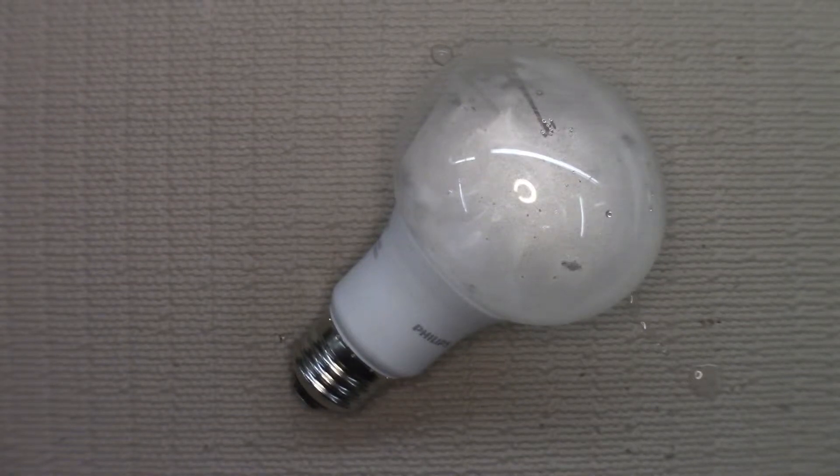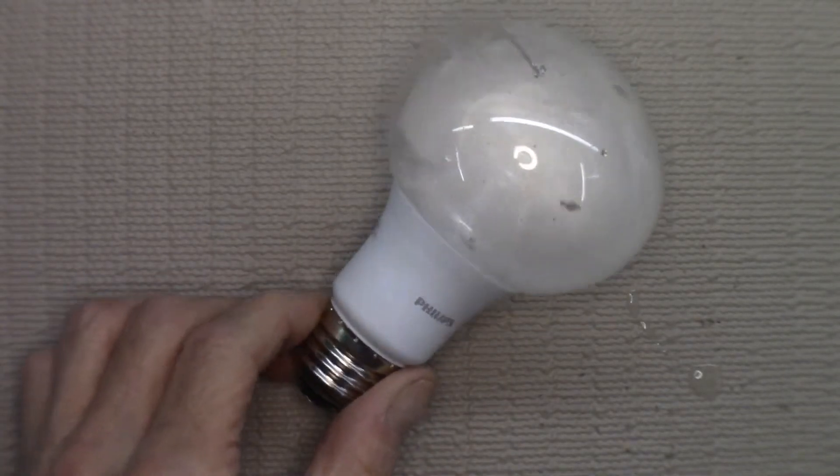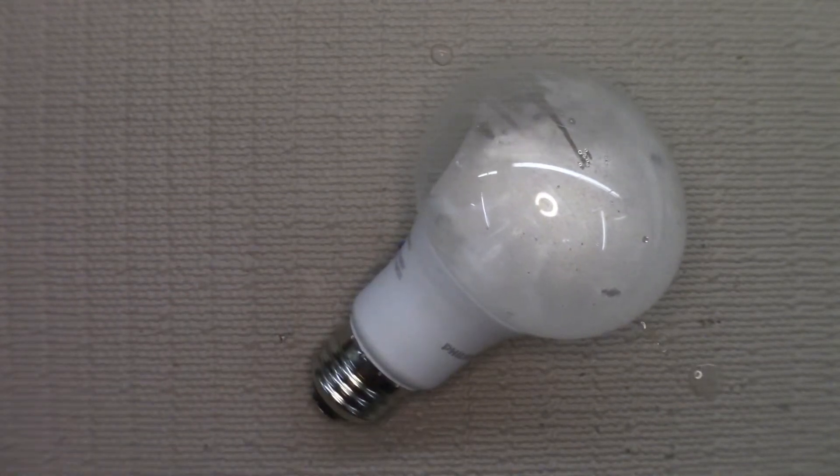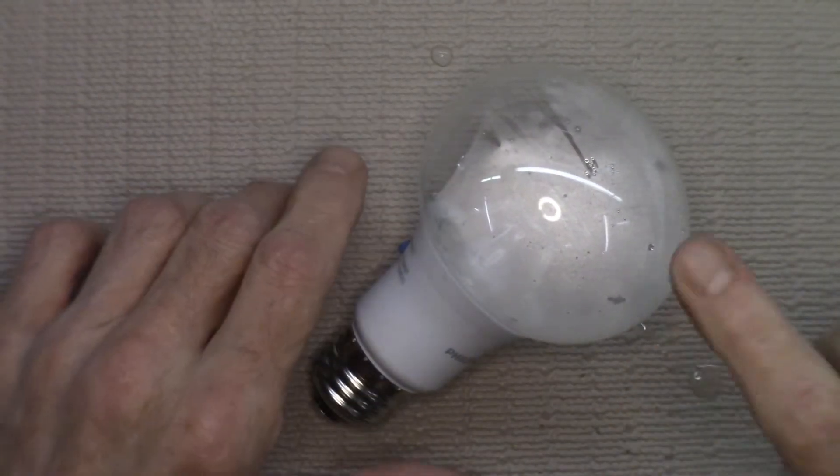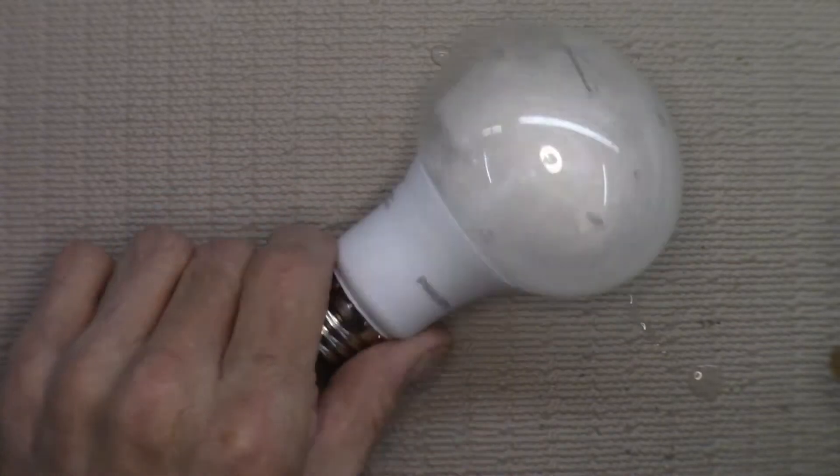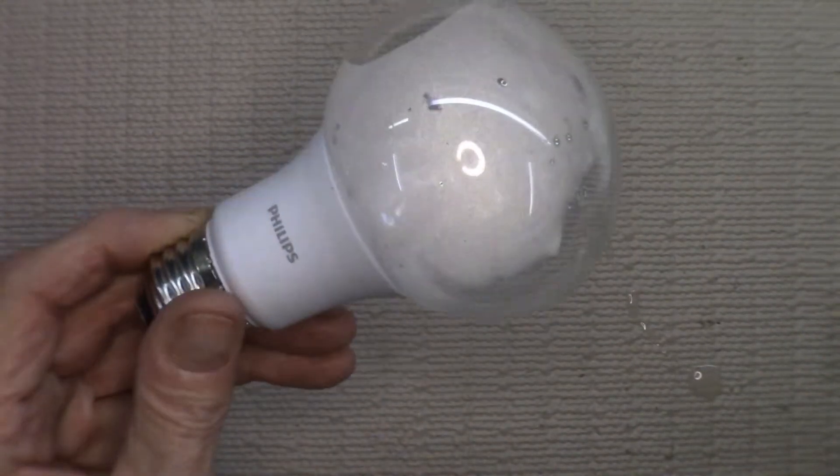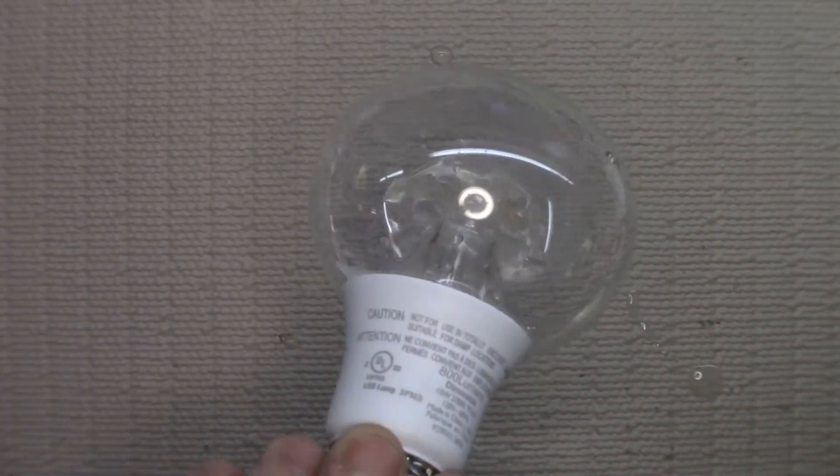I bought some LED dimmable bulbs at Home Depot. They're nice but they do get dirty, so I sprayed them with some Windex and rinsed them off, and this is what I got.